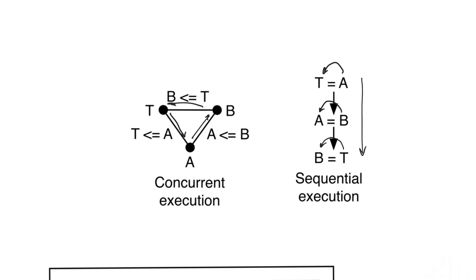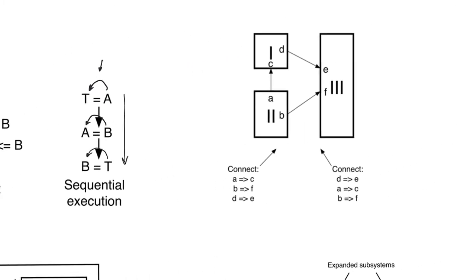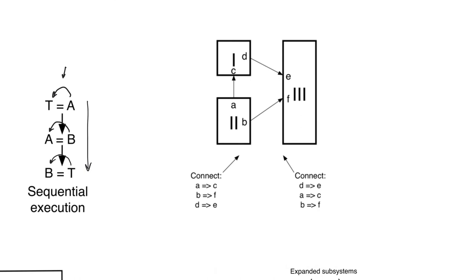We call this concurrent execution, and we call this sequential execution. The three statements T equals A, A equals B, and B equals T on the left are being implemented concurrently, which means they are being implemented at the same time. On the right, they are being implemented in sequence. And so VHDL is going to assume that all statements are being implemented concurrently.